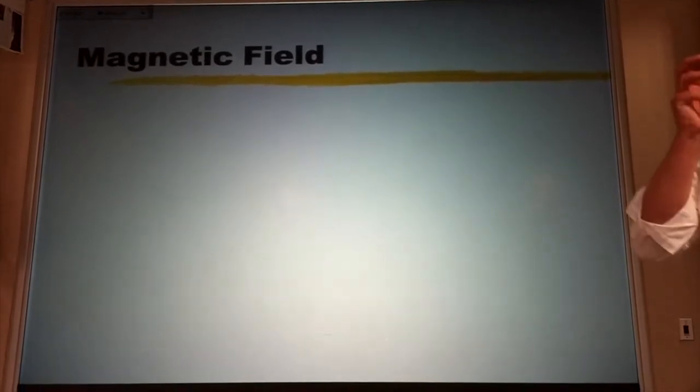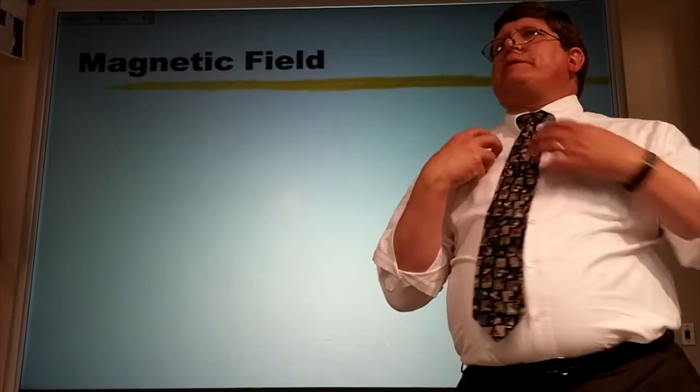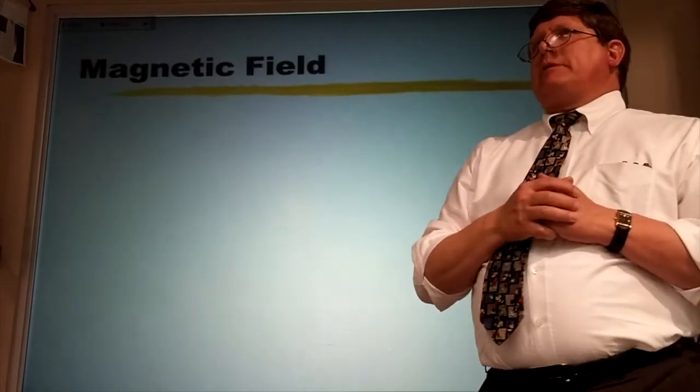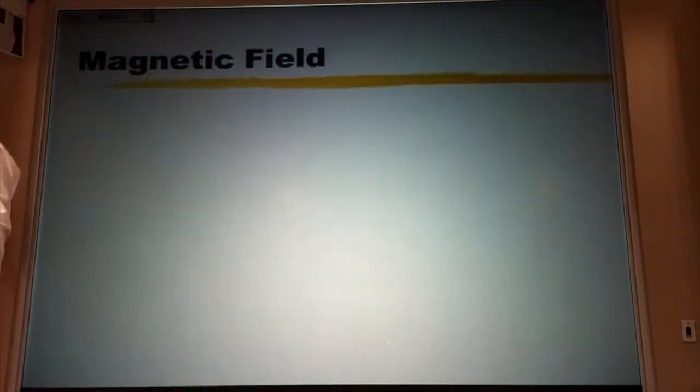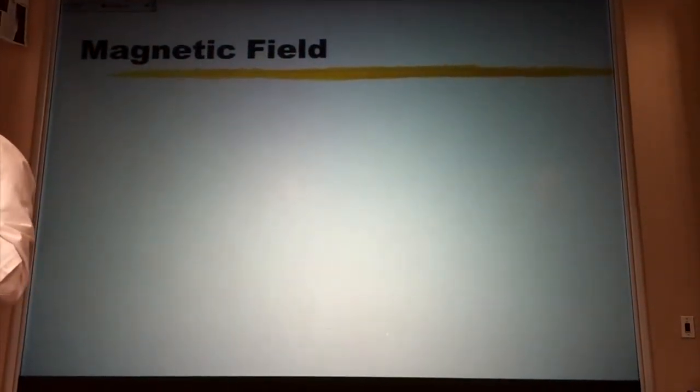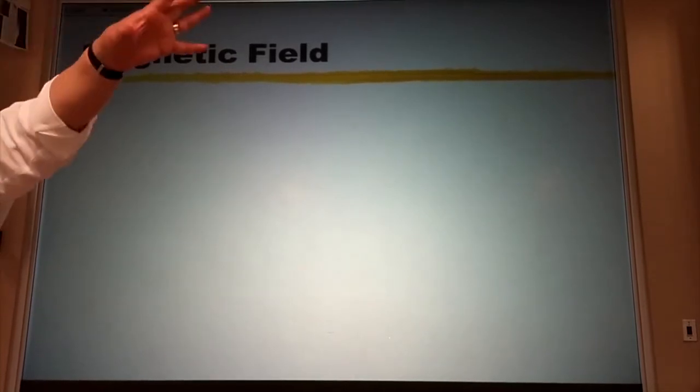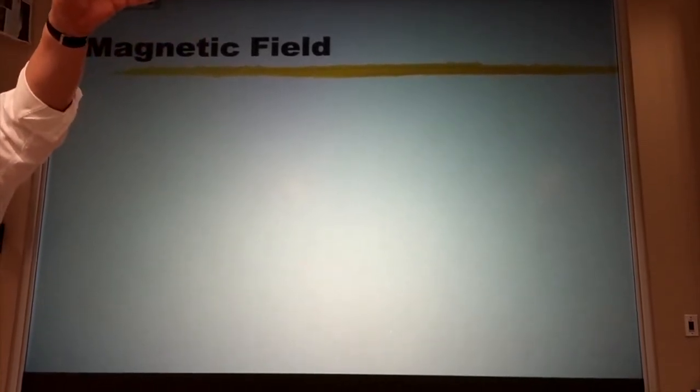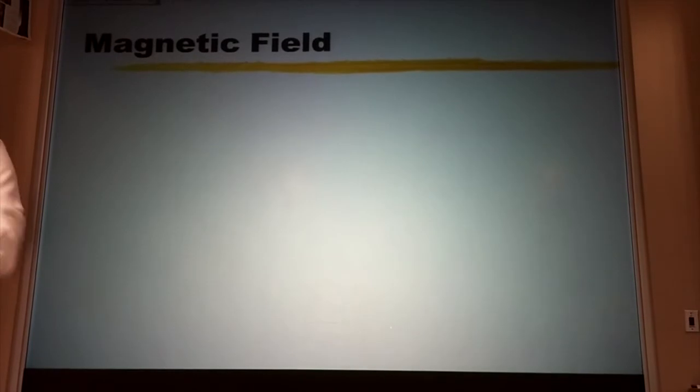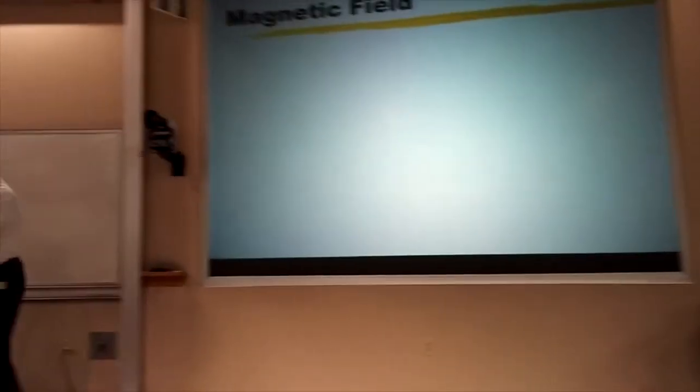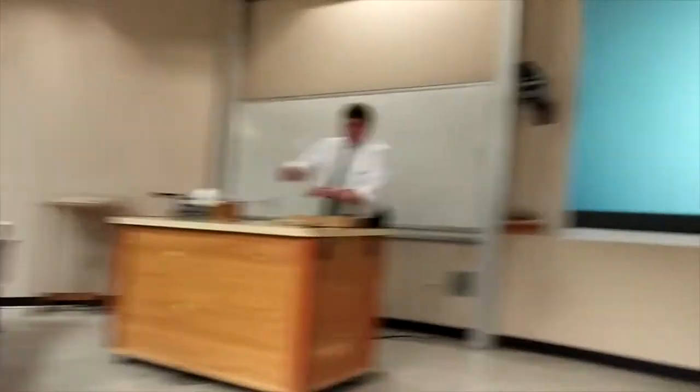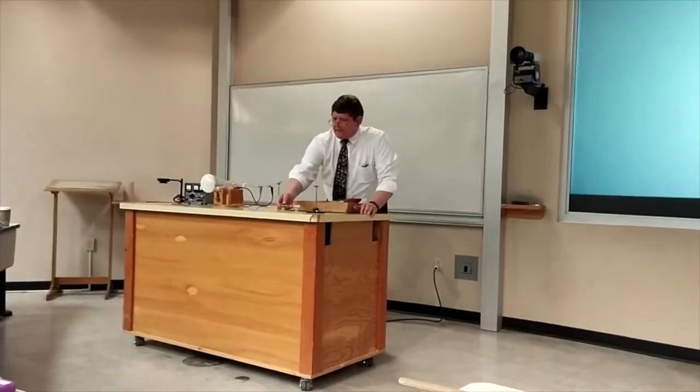Magnetic field - just like we had an electric field to get away from this action at a distance problem. In other words, if a charge here can push on a charge back there, how do we explain that? Well, this charge creates an electric field in the room everywhere, and the electric field pushes on that charge. The same thing is going to be true with magnetic fields.